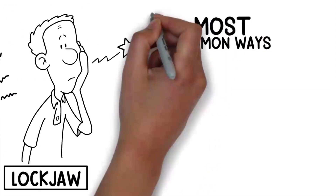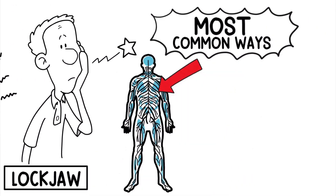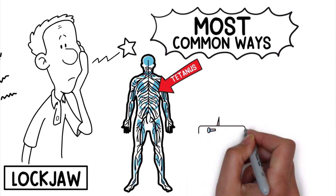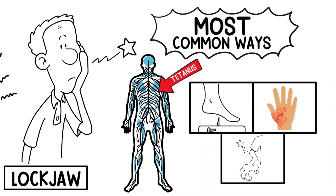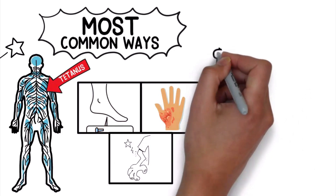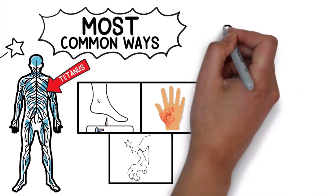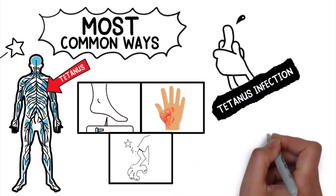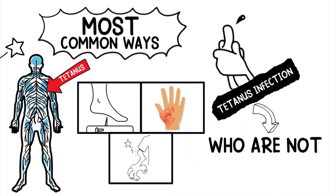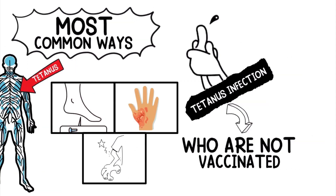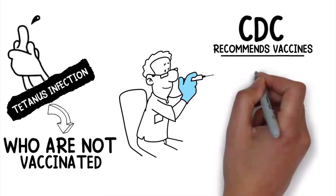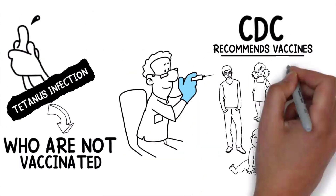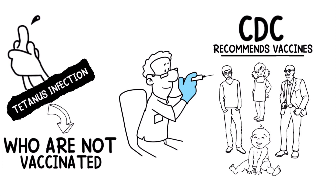Some of the most common ways that the tetanus bacteria can get into your body include puncture wounds, burns, and injuries with dead tissue. Any injury where there is a break in the skin could result in a tetanus infection in those who are not vaccinated. This is why the CDC recommends vaccines for infants, children, teens, and adults to prevent this infection from occurring.